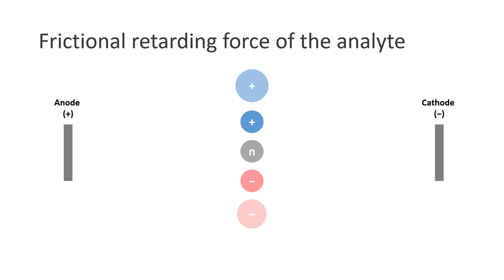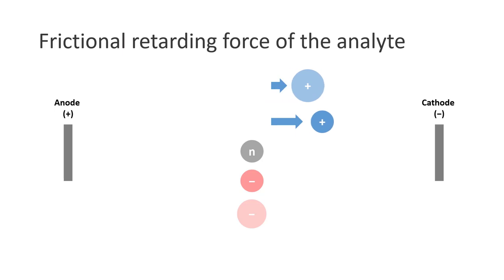Secondly, the electrophoretic mobility is inversely proportional to the frictional retarding force of the analyte. If the analytes are of the same charge, the bulkier cation will experience a stronger frictional retarding force, therefore moving slower towards the negatively charged cathode.